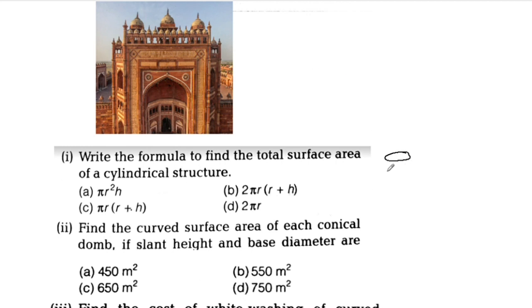This is the shape of the cylinder. This is the curved surface area. This is the top and bottom area. This is the total surface area.